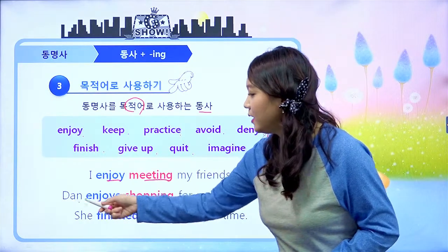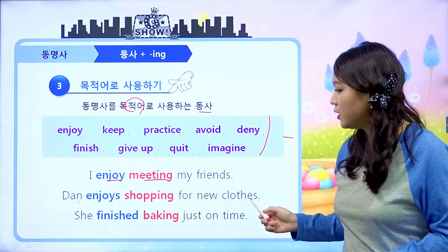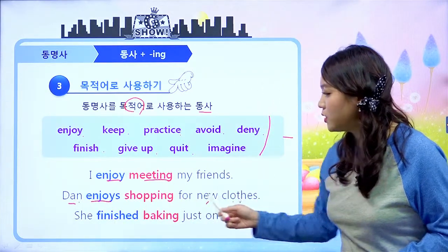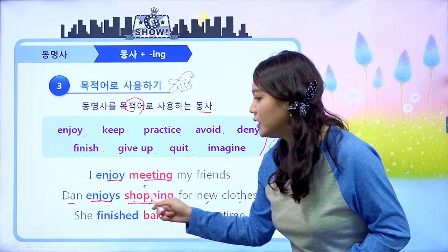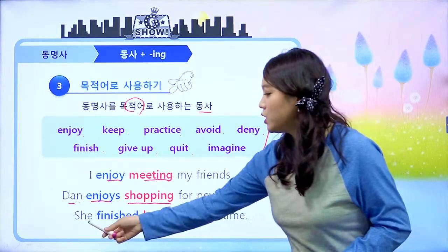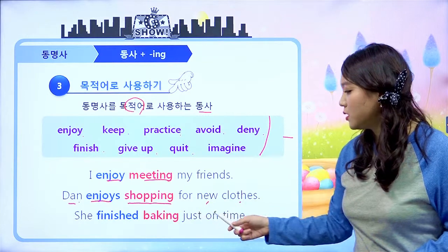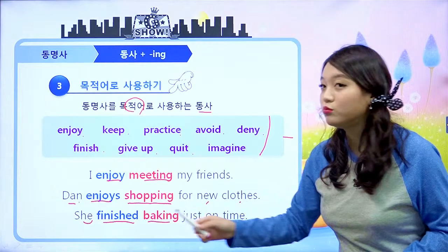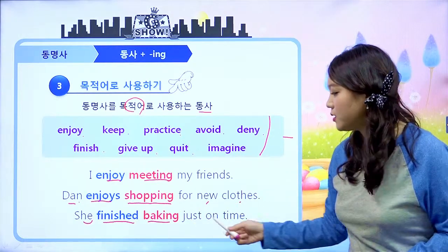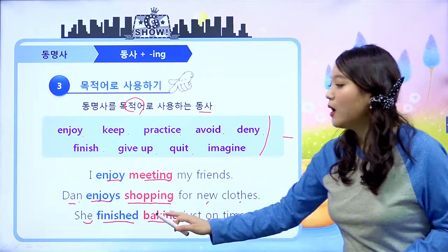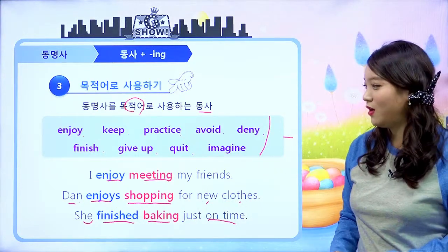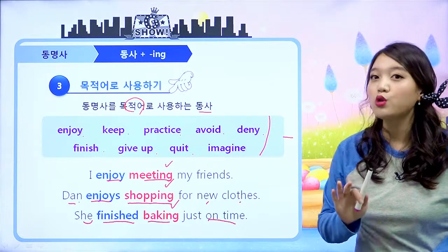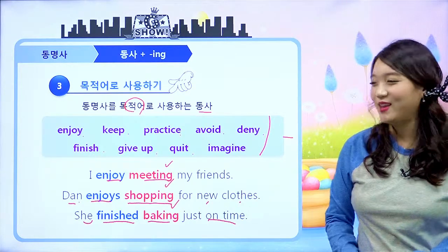예를 들면, Dan enjoys shopping for new clothes — Dan은 새로운 옷을 쇼핑하는 것을 즐긴다. She finished baking just on time — 그녀는 제 시간에 빵 굽는 것을 마쳤다. 이렇게 나오는 동명사들의 역할은 목적어로 사용된 동명사입니다.